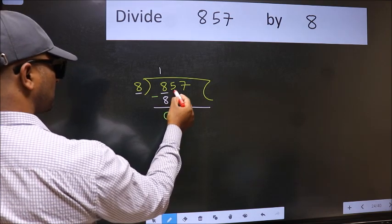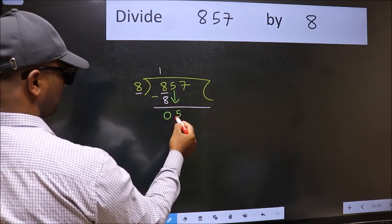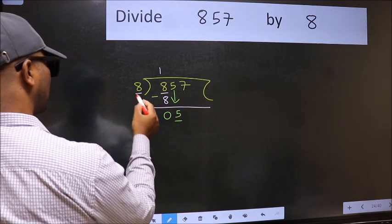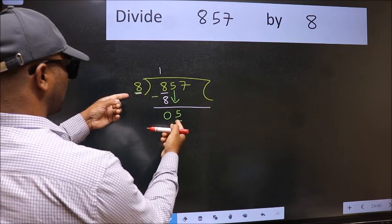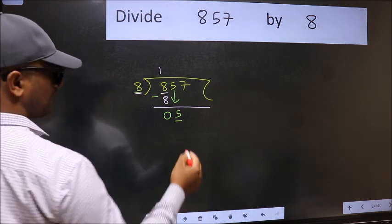After this, bring down the beside number. So 5 down. Now here we have 5 and here 8. 5 is smaller than 8, so we should bring down the second number.